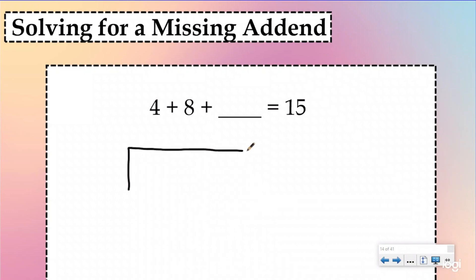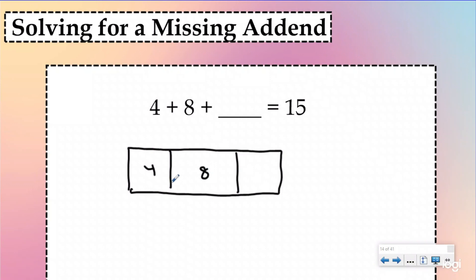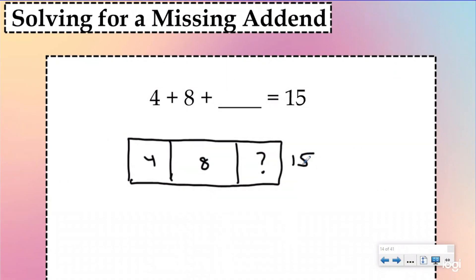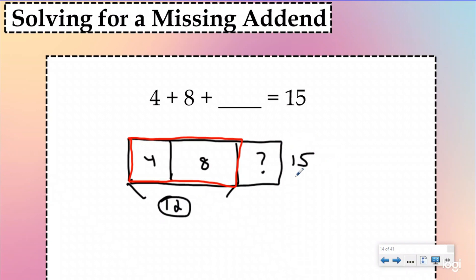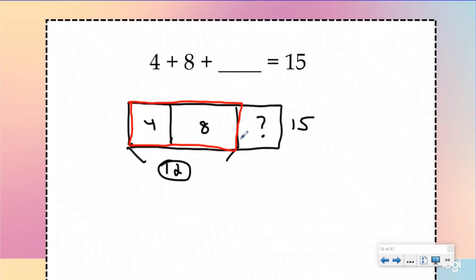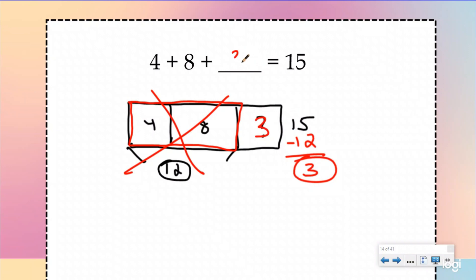Here I have my part-whole model. I know that one part is 4 and a big chunk is 8, but I don't have my missing add-in. I do know that the total, or the sum, of all three numbers is 15. First, I combine what I know: 4 plus 8 is 12. Then I subtract that 12 from 15, which leaves me with 3. That means my missing piece has to be 3, because 4 plus 8 plus 3 gives you a sum of 15. To find a missing add-in, you can rewrite this as a subtraction problem using your fact family knowledge.